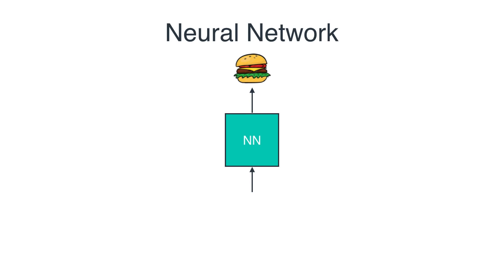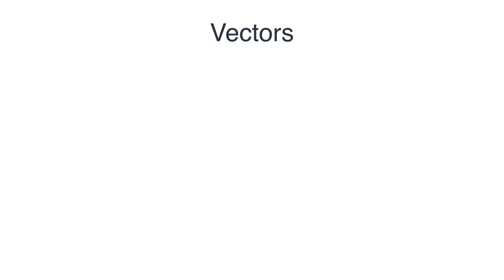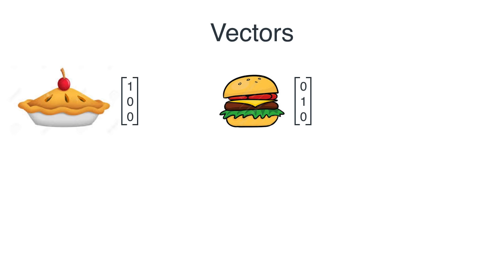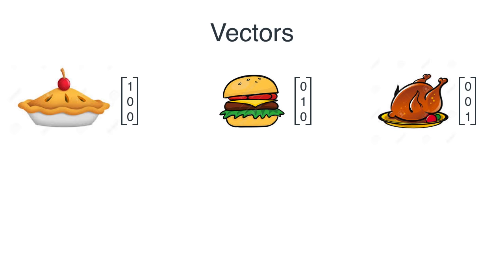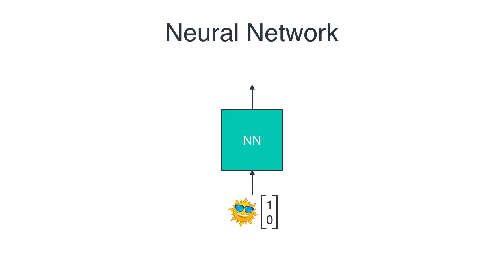Let's do some math, and for that we're going to introduce vectors. We'll represent the food by some vectors and the weather by some other vectors. Apple pie is the vector (1,0,0), the burger is (0,1,0), and chicken is (0,0,1) — since we have three possible foods, we represent them with vectors of length 3. The sunny day is represented by the vector (1,0) and the rainy day by (0,1).